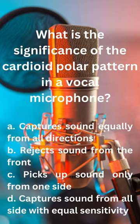What is the significance of the cardioid polar pattern in a vocal microphone? A. Capture sound equally from all directions. B. Rejects sound from the front. C. Picks up sound only from one side. D. Capture sound from all sides with equal sensitivity.